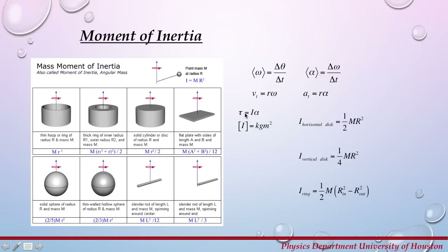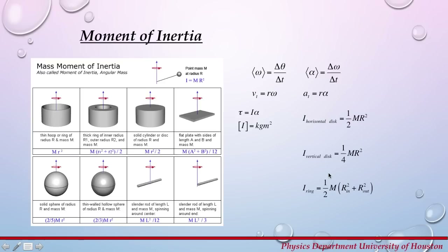Newton's second law for rotational motion states that the total torque on a rotating object is equal to its moment of inertia times the angular acceleration. The units for moment of inertia are kilogram meter squared. The moments of inertia for objects used in this experiment are: moment of inertia for a horizontal disk is one-half mass times radius squared; for a vertical disk is one-quarter mass times radius squared; and for a ring is one-half mass times inner radius squared plus outer radius squared.